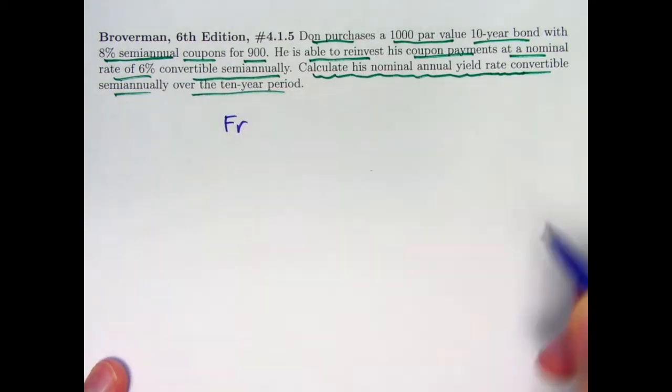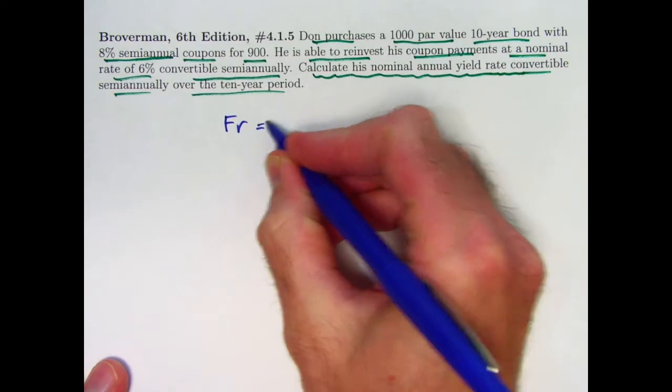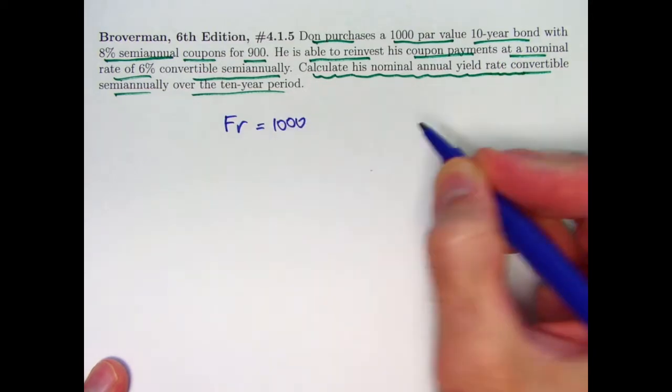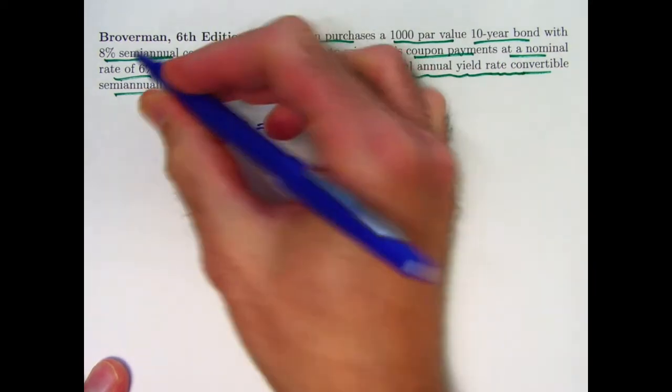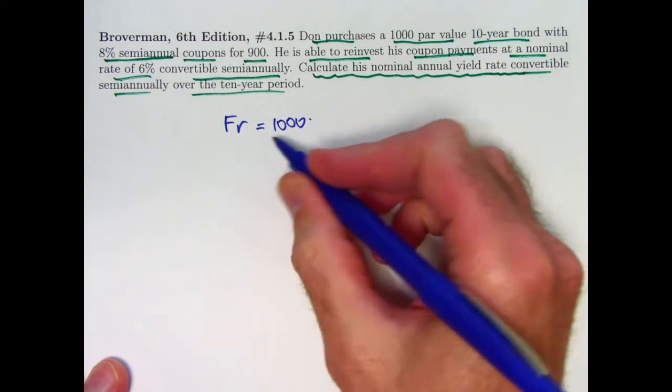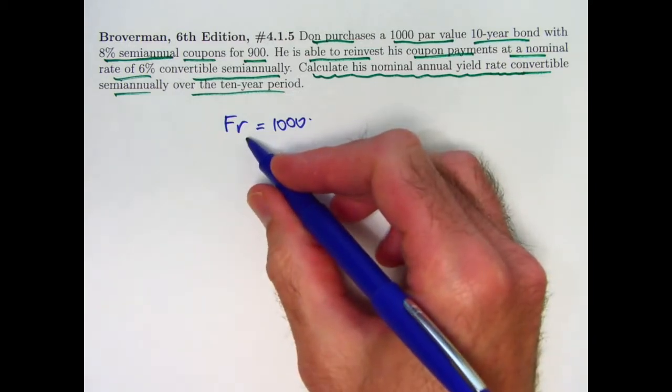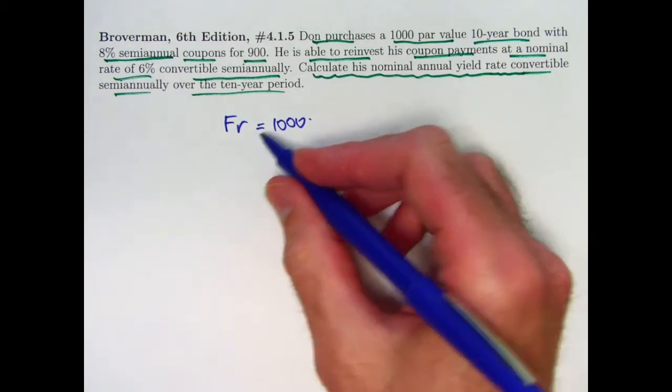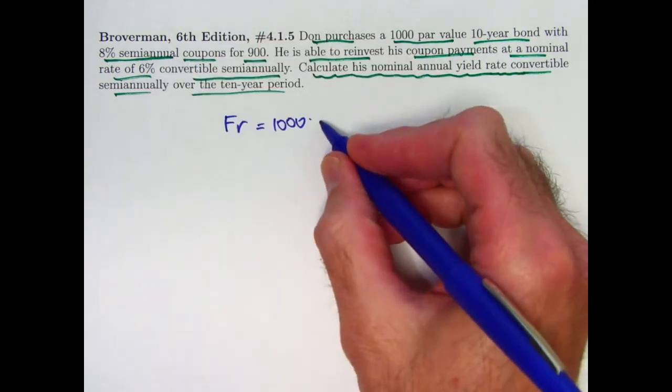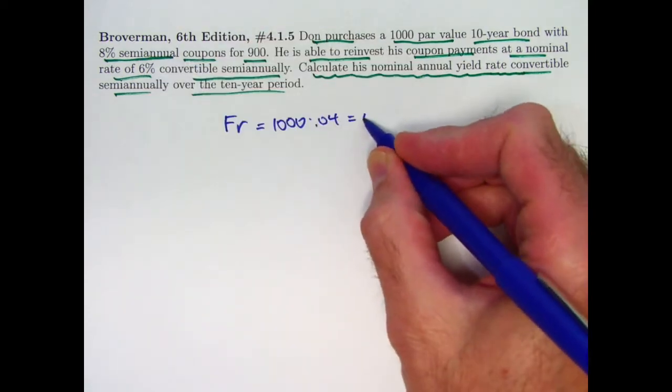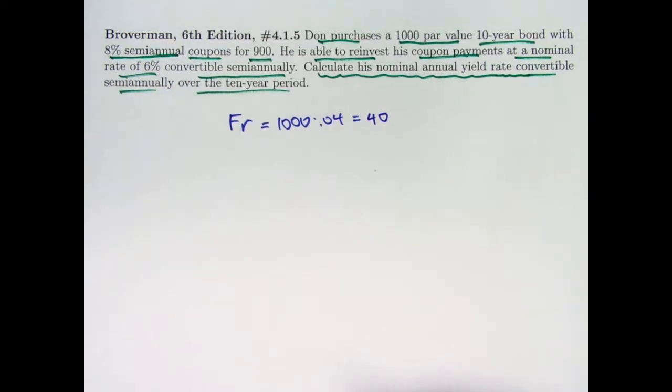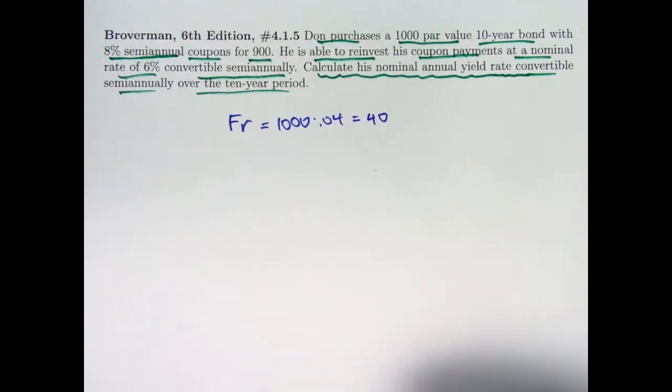What are the coupon payments? That would be good to know. What is F times R? F is the face or par value. That's 1000. R is not 8%, it's 4%. R is the semi-annual or periodic coupon rate. Take the 8% divided by 2, 4%. So 1000 times 0.04 is 40. The coupon payments are of 40. Those are going to get reinvested in this other account.